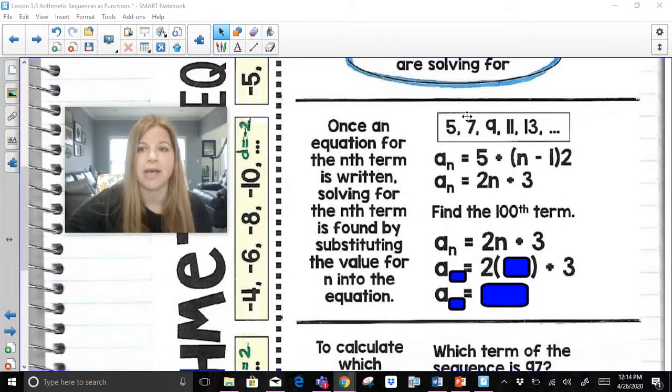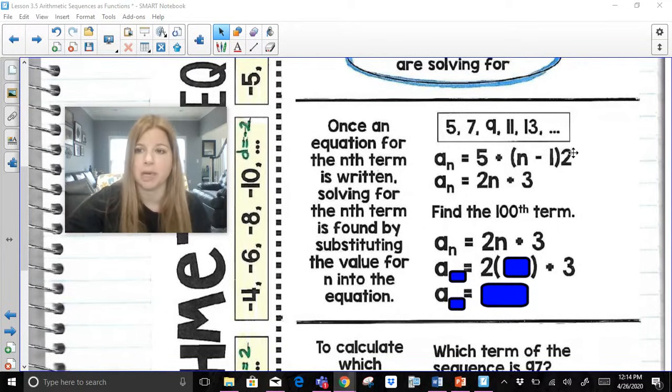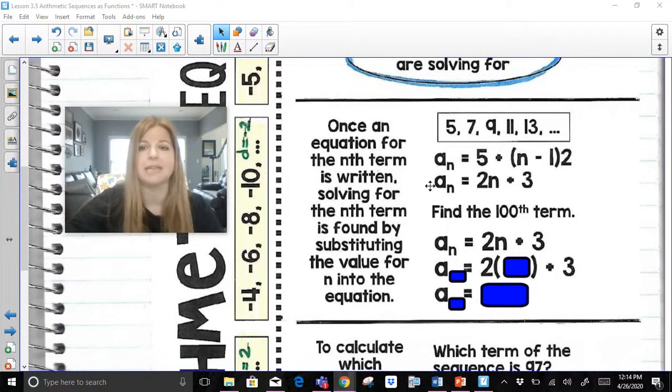So if I gave you the sequence 5, 7, 9, 11, 13, and I said to write the equation for the nth term, we would plug in a 5 for my a sub 1. We see it's increasing by 2, so my common difference here is 2. And let's say I already did all the distributing and combining like terms, and I get this. a sub n equals 2n plus 3.